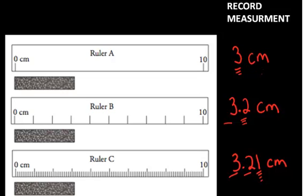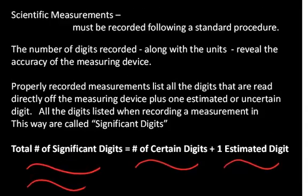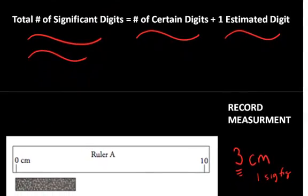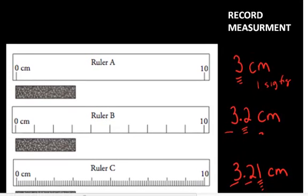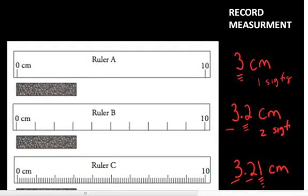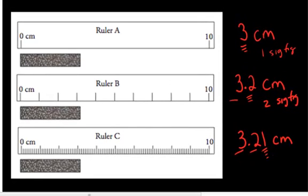So in this case, I would say there's one significant digit in this measurement. One sig fig is often how we say it. And that would be zero certain plus one estimated digit to give me my total number of significant digits for this particular Ruler A. Then Ruler B, I have one certain and one uncertain, so that would give me a total of two sig figs. And for Ruler C, I have two certain and one uncertain for a total of three sig figs in this measurement.